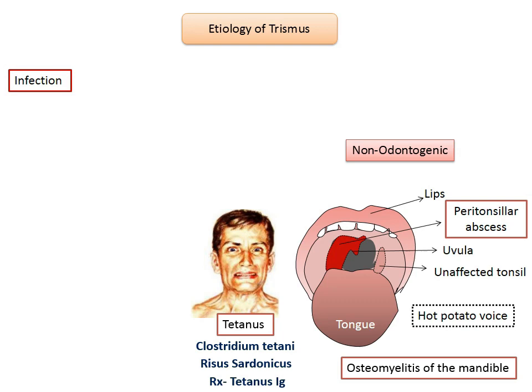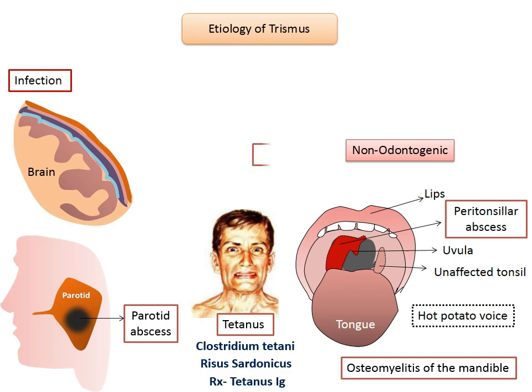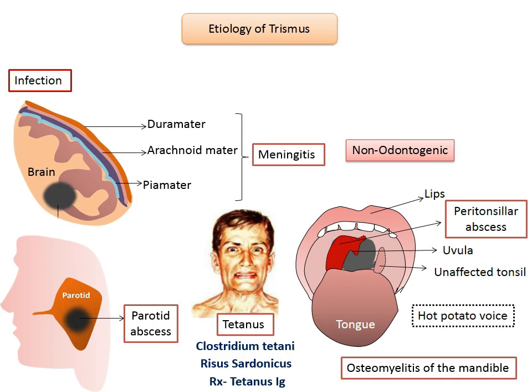Other types of non-odontogenic infections which may cause trismus include a parotid abscess or meningitis, which is the inflammation of the meninges of the brain — the dura mater, arachnoid mater, and pia mater — or there could be abscess formation in the brain, which can lead to trismus.